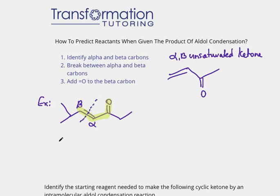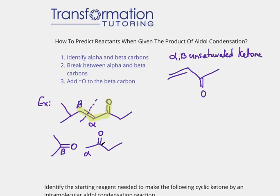I put a line through it and break it. I now have two fragments: this was my beta carbon and this was my alpha carbon. The final step is to add a double bond=O to the beta carbon. That is how I know that this reactant with this reactant, when they underwent aldol condensation — usually with base followed by heat — produced this product.